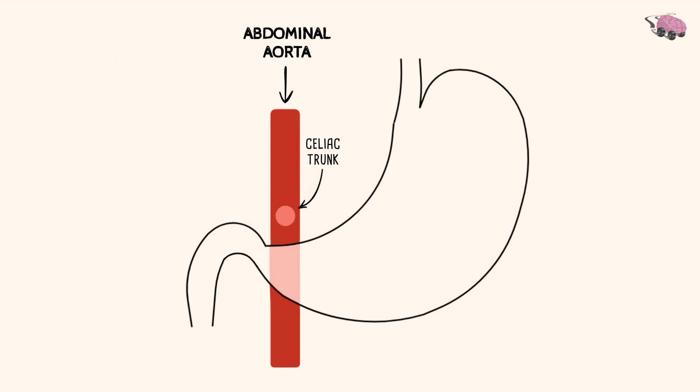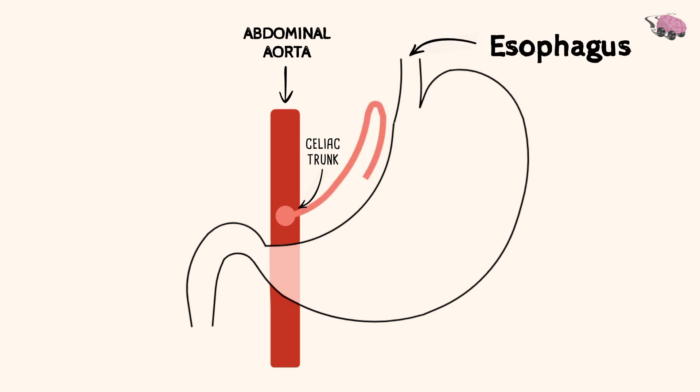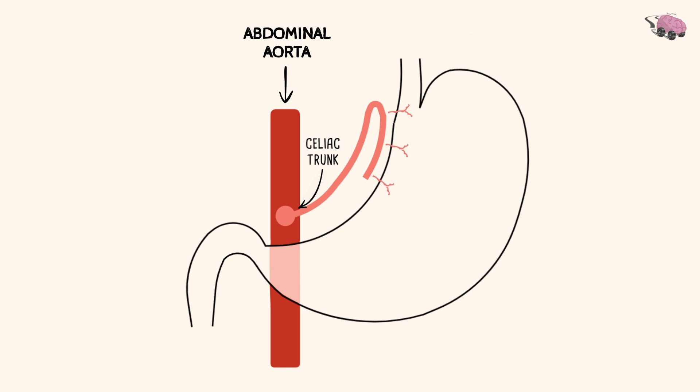The first is the smallest branch. It goes towards the esophagus and winds around the lesser curvature of the stomach, stopping midway. This is the left gastric artery.